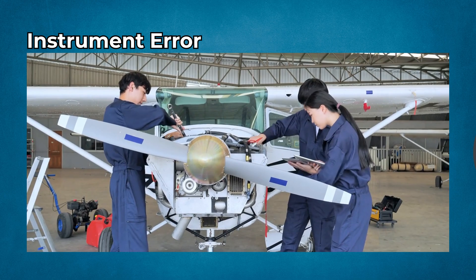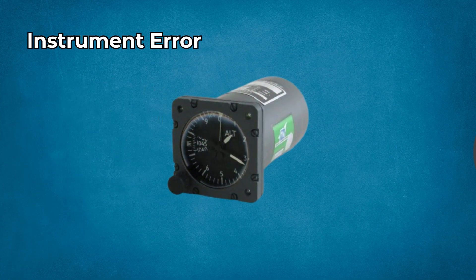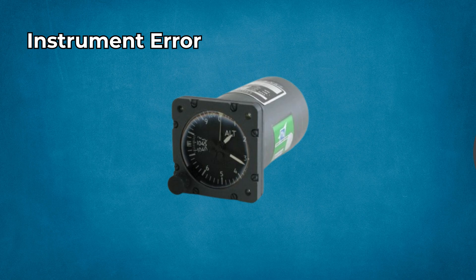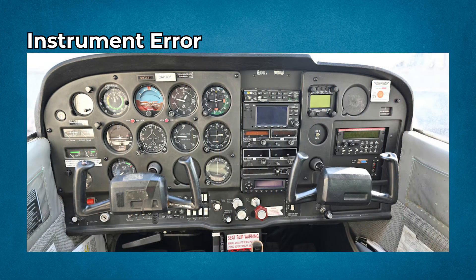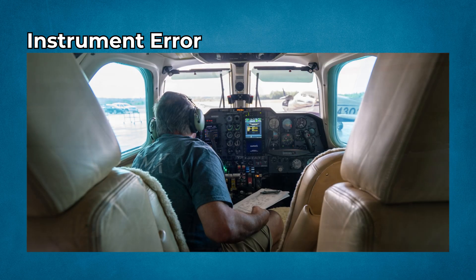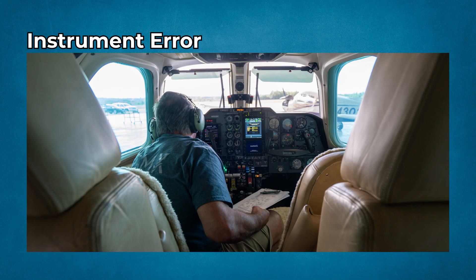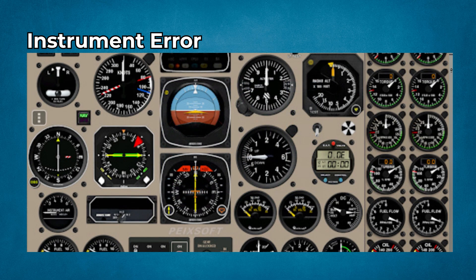During climb or descent, a faulty barometric capsule or internal mechanism can give you inaccurate altitude readings, potentially several dozen feet off. Mitigations include pre-flight calibrations, periodic inspections per regulations, and functional checks using known field elevation. Always cross-check with reliable sources like GPS or other certified altimeters.